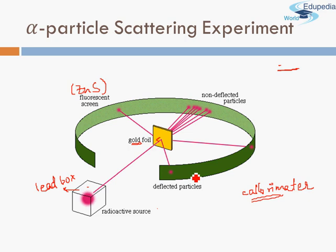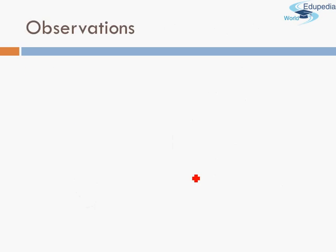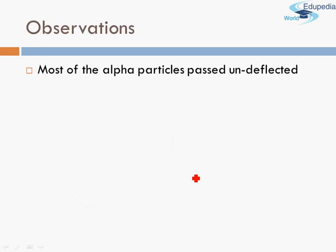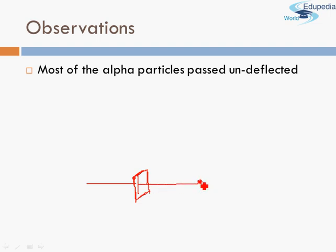What were these observations? The first observation was that most of the Alpha Particles passed undeflected. That is to say, when the Alpha Particles traveled towards the gold foil, they simply passed through it like there was nothing present there — they passed undeflected. This was true for pretty much every Alpha Particle that was bombarded.